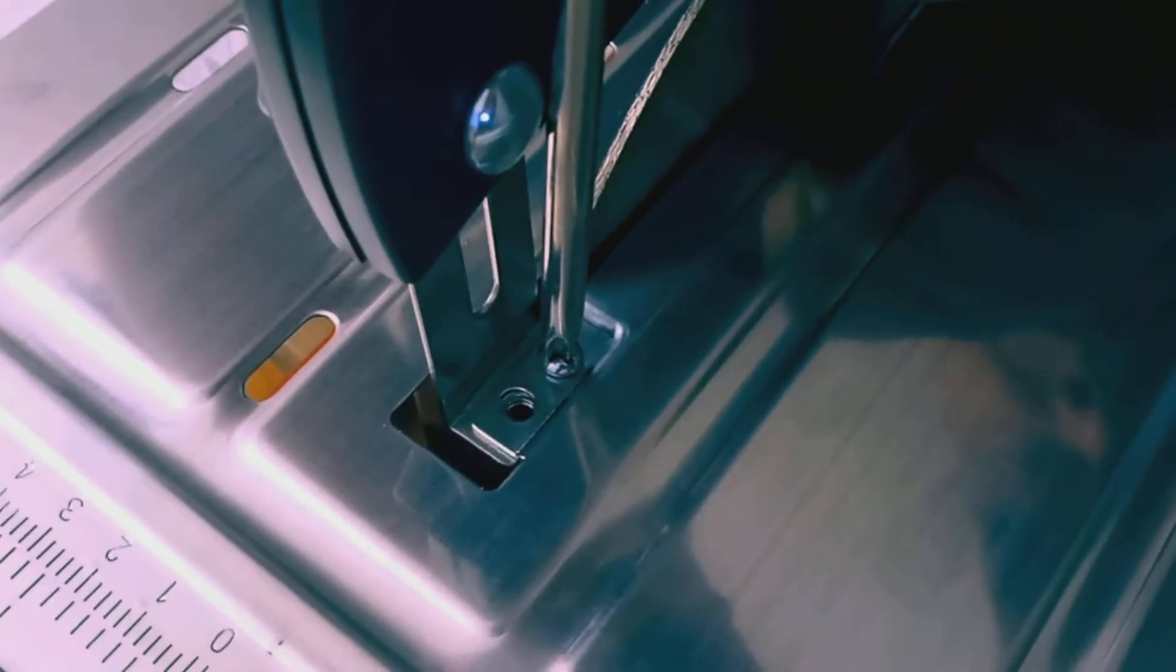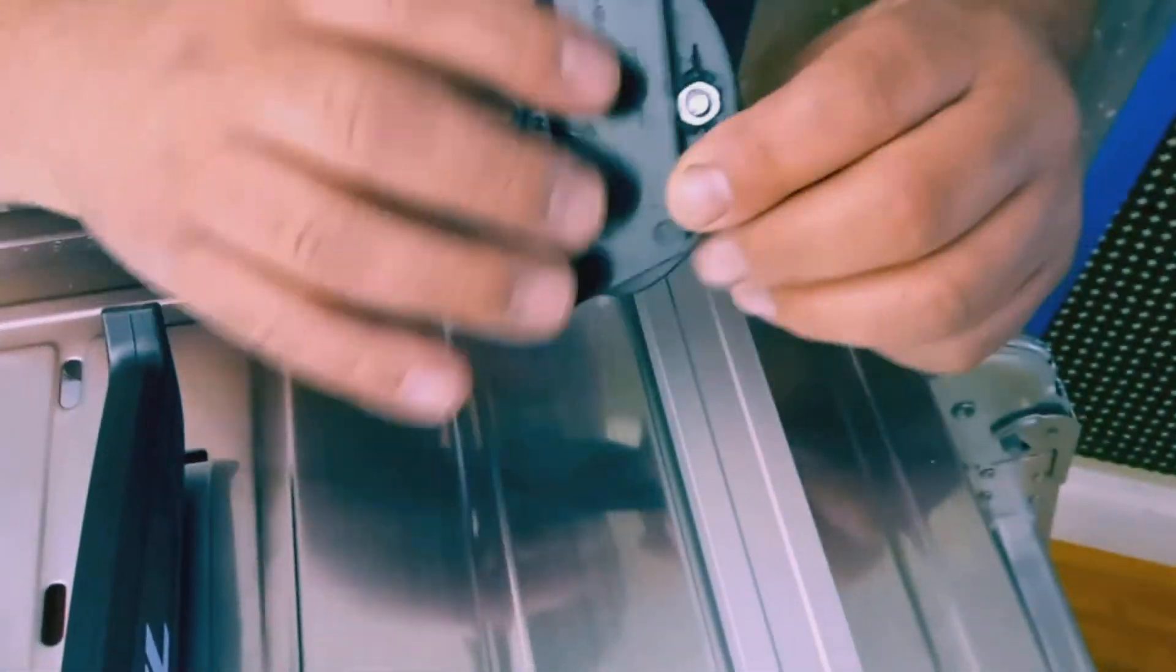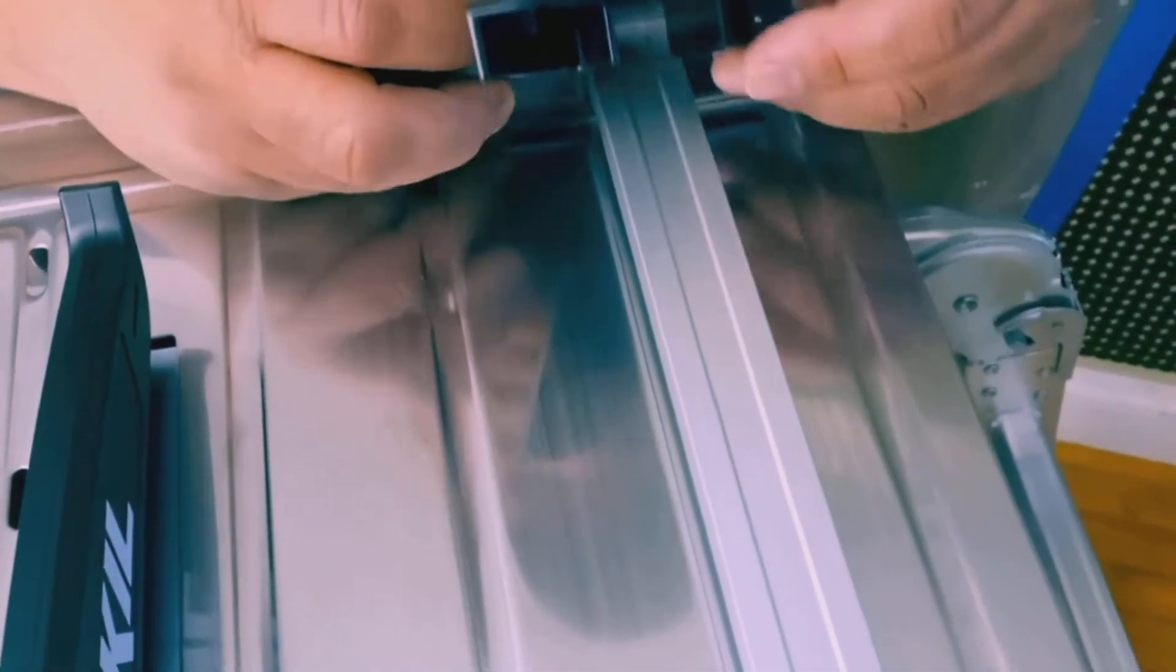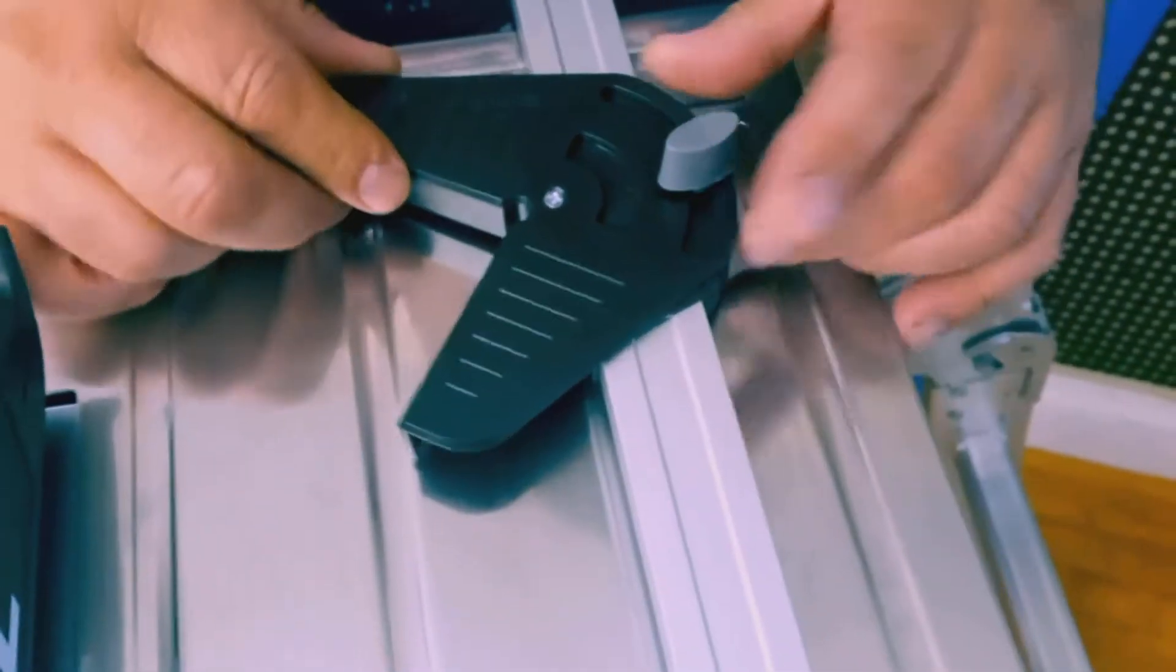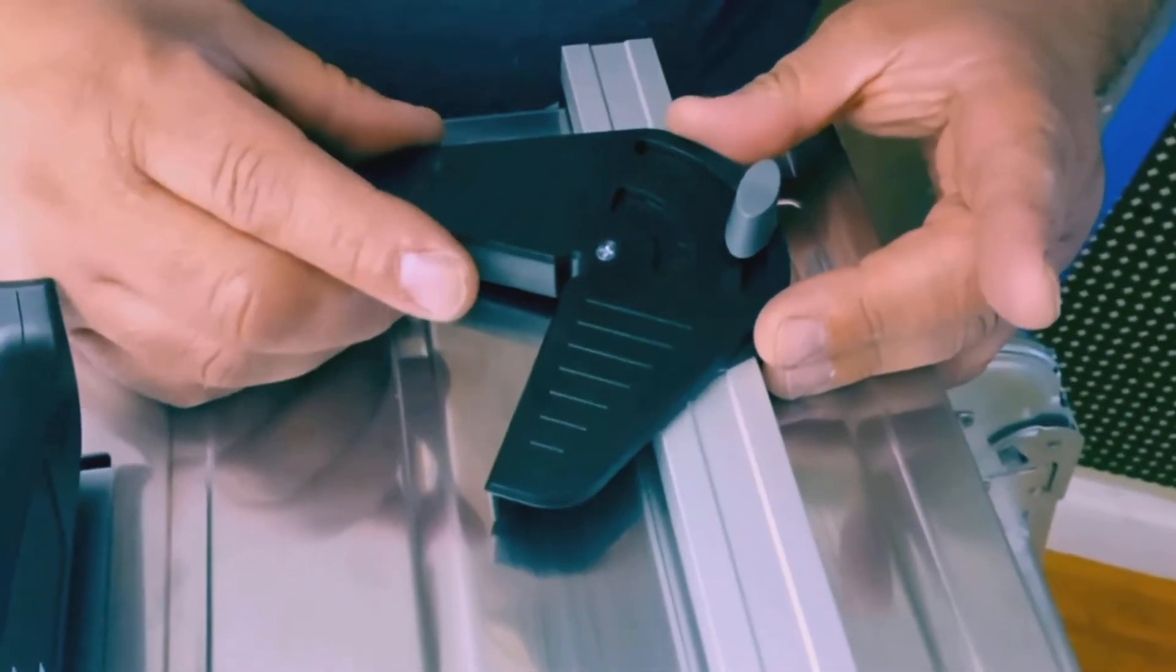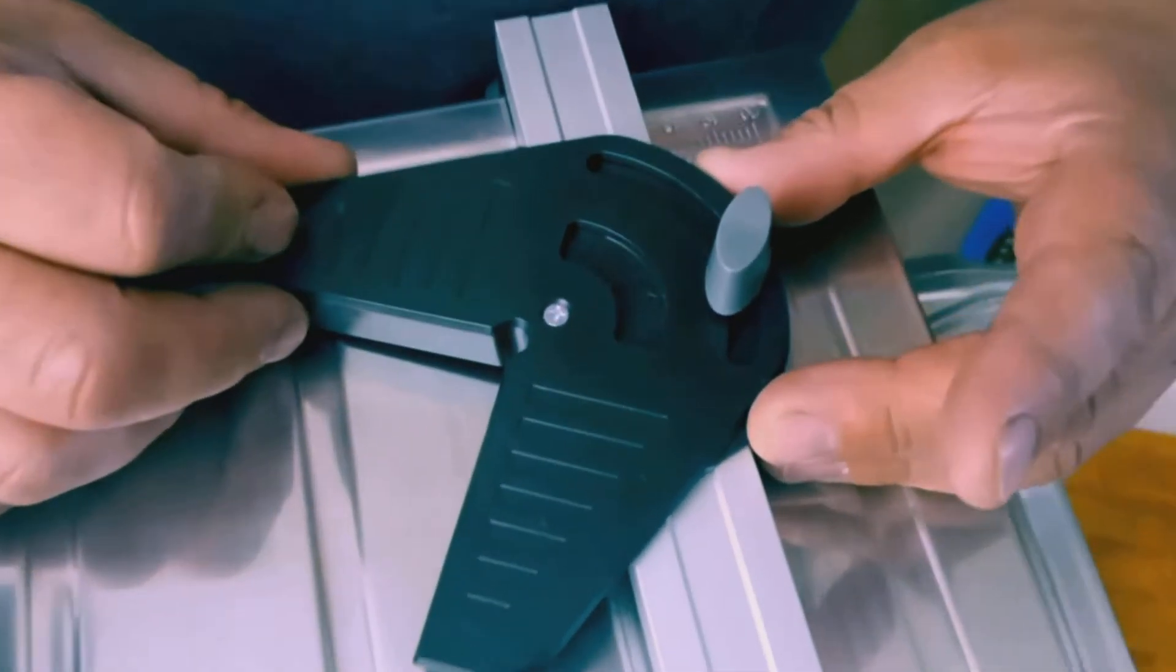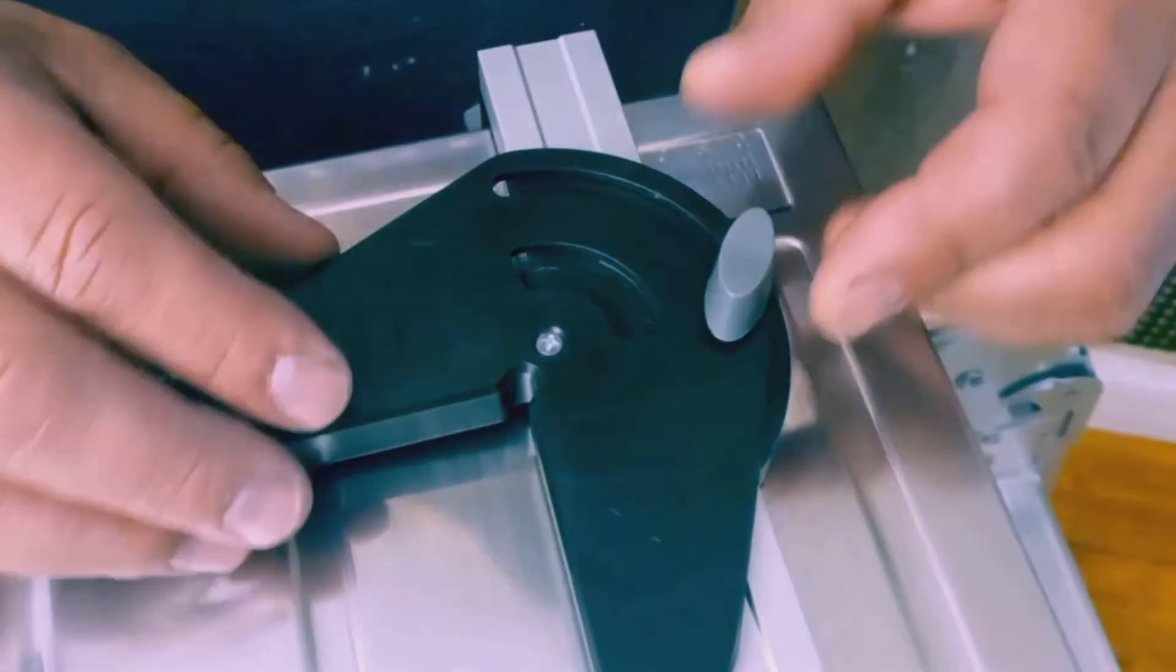So the miter gauge basically just sits right on top of your rip fence right here. And then to adjust the angle, it's got an indicator from zero degrees all the way up to 45 degrees, and then back again to zero on the other side.